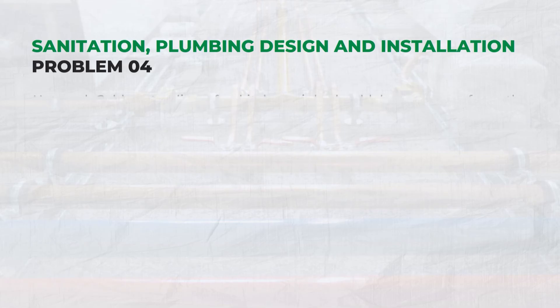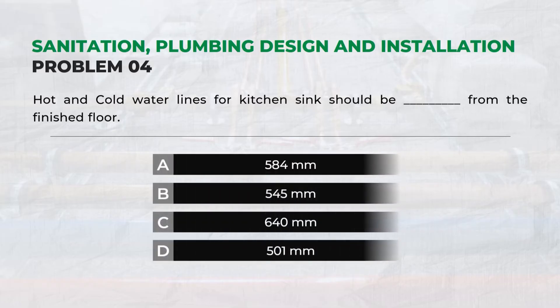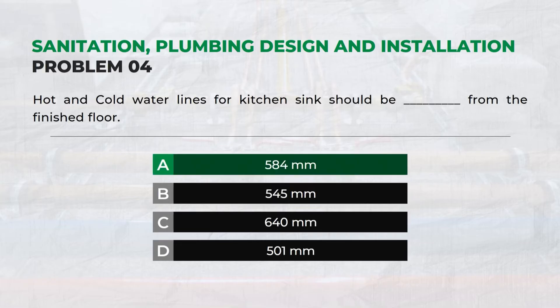Hot and cold water lines for a kitchen sink should be roughed in at what height from the finished floor? — Answer: A. 584 mm.